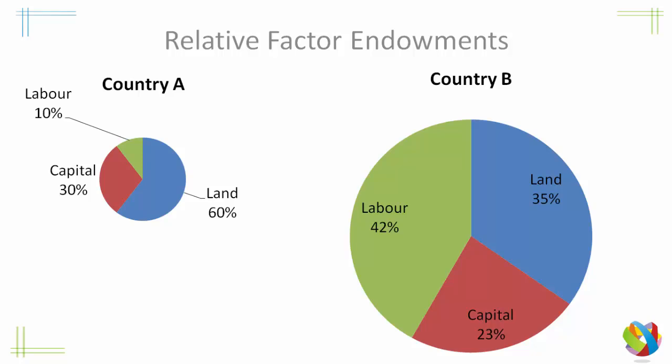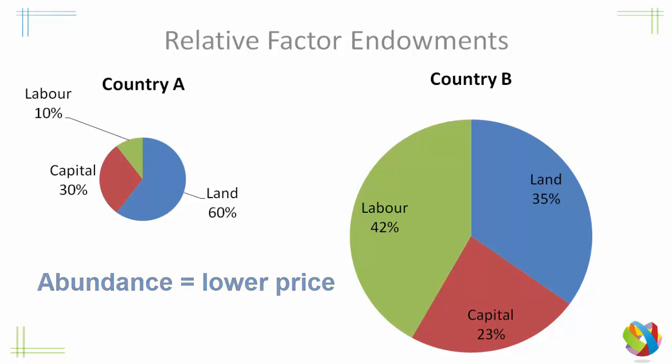And this makes total sense. If you have a lot of something, it will be cheaper, and therefore you're probably more likely to be able to use it as an advantage. This is very appealing to economists, and for a long time the Heckscher-Ohlin theory was accepted as a way of explaining patterns of global trade.